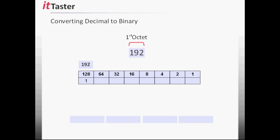We then subtract 128 from 192, which equals 64. We repeat the process again using the remainder. The largest bit value that fits into 64 is of course 64, so we set the 64's bit to on by writing 1. We subtract 64 from 64 which equals 0 — we have no remainder — so we set the other bit values to off by writing 0. This gives us the binary number 11000000 for the first octet. We repeat this process for the remaining octets.